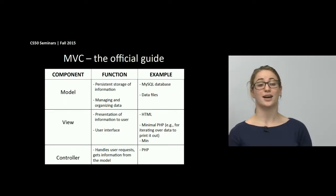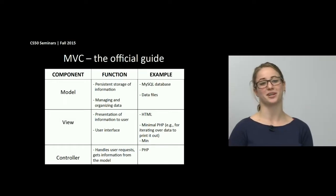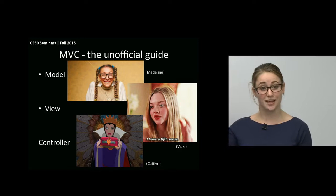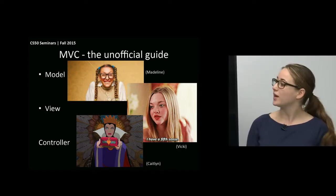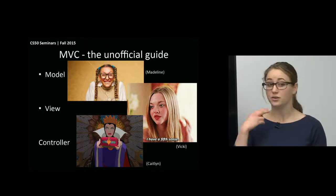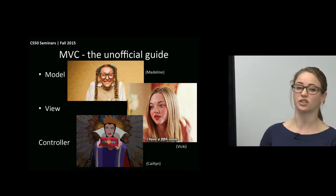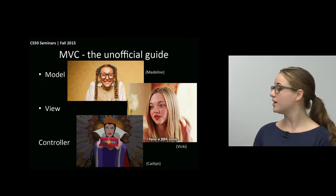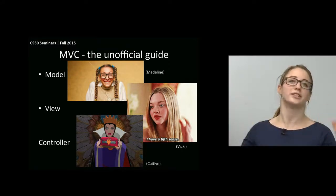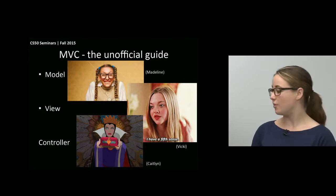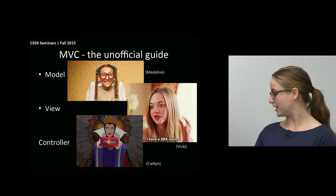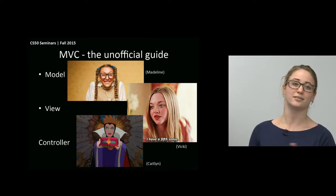Now I'm going to go into an unofficial guide, inspired by last year's Ruby on Rails seminar. We have a couple of characters. There's our model, Madeline, who is very smart, loves data, knows all about data, but she's a little antisocial and doesn't usually interact with people unless told to. There's our view, Vicky, who is gorgeous but not so smart. And lastly there's our controller — hopefully your controllers will be less nefarious — this is our evil queen Caitlin, who really likes ordering people around but doesn't like doing things herself.